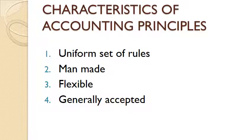Next are the characteristics of accounting principles. There are four main characteristics. The first one is uniform set of rules — that means a uniform set of rules or guidelines are developed to ensure uniformity among all the accounting statements so that they can be easily understandable. To maintain this uniformity, a specific set of rules is prescribed.